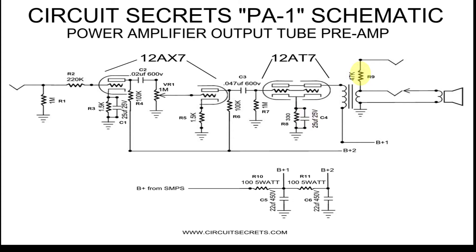R9 is to reduce the signal from the output portion for coupling to the line in on my sound card. You could use a potentiometer to have a variable output. A lower value increases the signal strength. Use caution and measure the output before attaching to the line in on any other device.